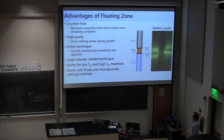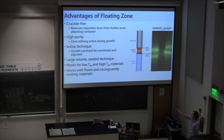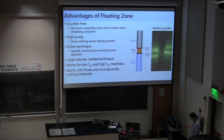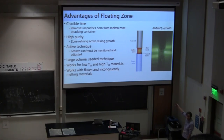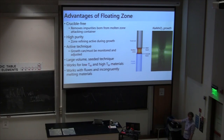It's high purity because of the zone refining technique. Also it's an active technique, meaning this is a crystal growth technique that you can actually monitor and adjust — and in fact you must monitor and adjust as it proceeds. You actually actively participate in it; you don't just put it into a furnace, put in a heating sequence, and leave for a week. You have to monitor the growth process. Another advantage is it's a large volume technique. A lot of neutron scatterers like this because you can get cubic centimeter volume crystals if you're successful, which is a big advantage for inelastic neutron scattering. And it's a seeded technique — if you have a seed crystal, you can very soon get a usable single crystal.